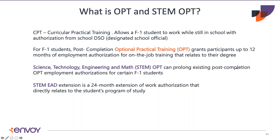CPT may be granted for just a summer internship or for a full 12 months. However, if a foreign national works full-time on CPT for 12 months, they are not eligible for post-completion OPT. Working part-time on CPT would not prevent them from obtaining OPT. Employers may have employees working under CPT before they graduate. In some cases, foreign nationals who are not locked into the H-1B cap and have no other work authorization options may re-enroll in school to obtain CPT, though this can attract scrutiny from USCIS when they later apply for H-1B.